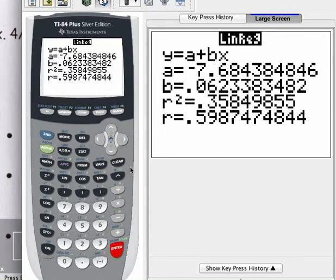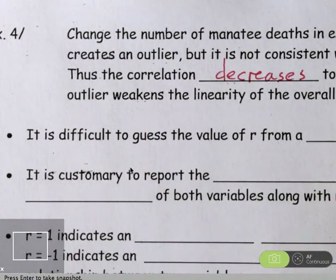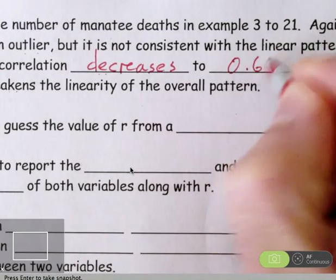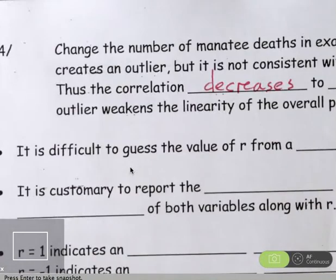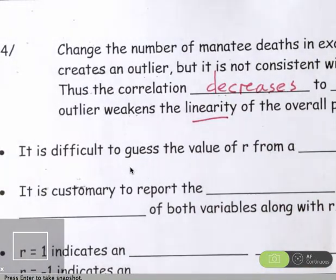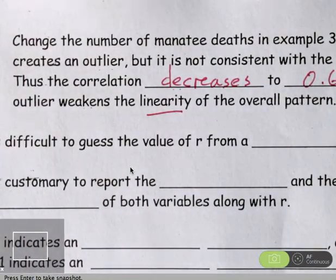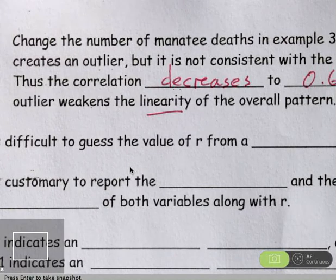So, the farther away we get from 1, the weaker the correlation here. The correlation is significantly weaker, 0.60 by including the outlier. This outlier weakens the linearity of the overall pattern. So, because of the position of this outlier, it does not match the linear trend in the data. And that detracts from the correlation. It lowers the correlation. It's pretty dramatically affected from 0.94 down to 0.6. It's pretty dramatically affected by that outlier.